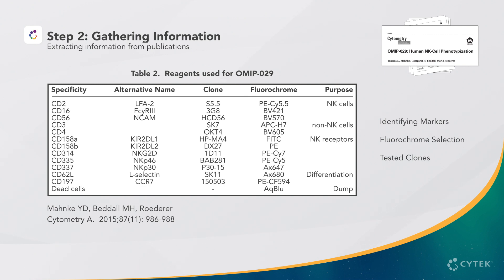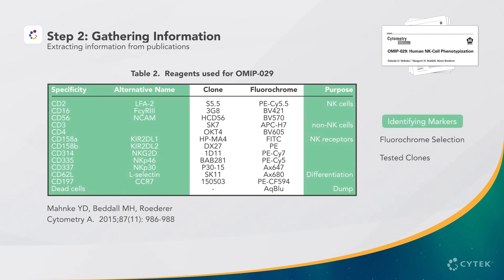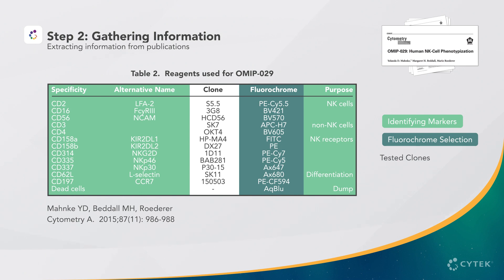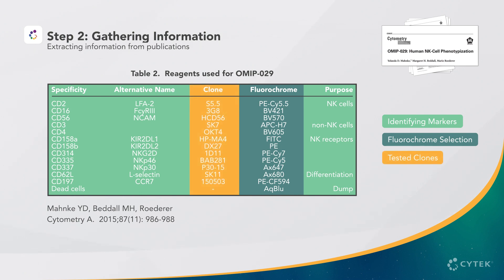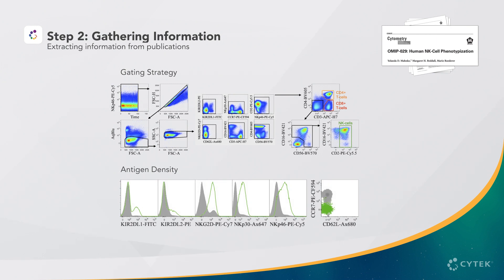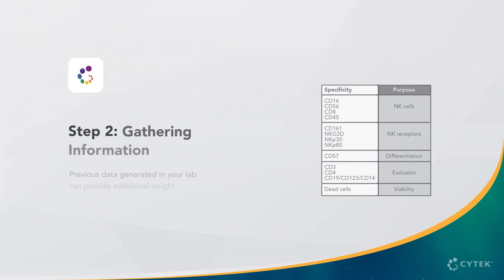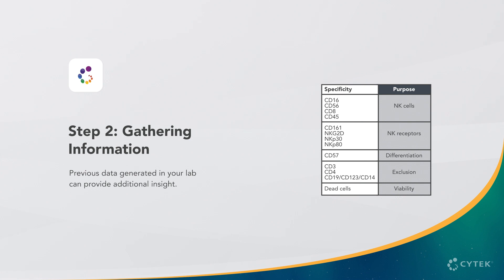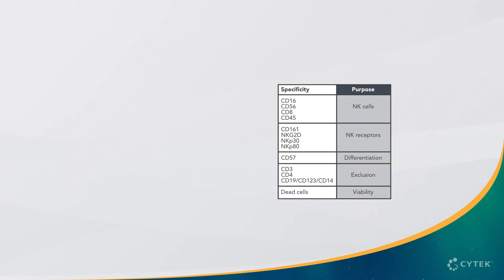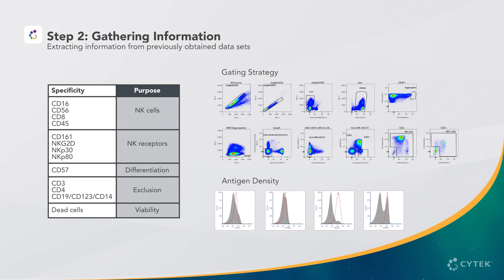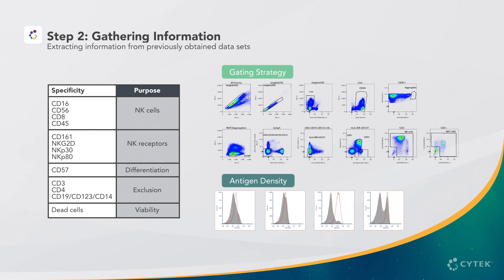For example, OMIP-029 by Monki et al. describes a 13-color assay to phenotype NK cells in human peripheral blood. Here in Table 2 from this paper, we can view identifying markers, their fluorochrome selection, and which clones were tested. By further examining the OMIP figures and detailed methods, we can find the gating strategy and expected antigen density. Additionally, previous data generated in your lab can provide further insight — this experiment was generated by SciTech for NK cell characterization.